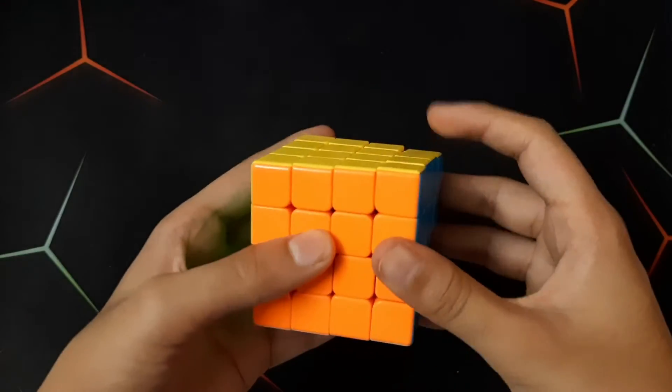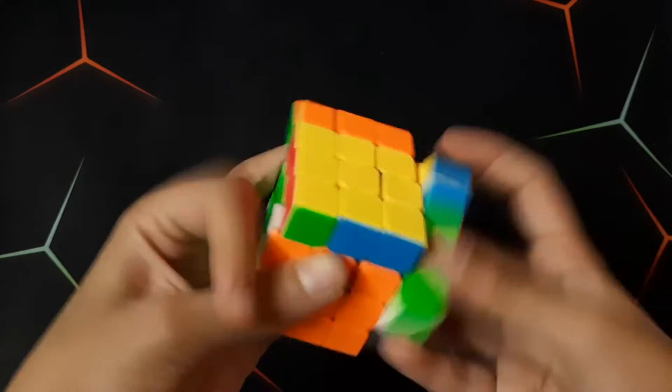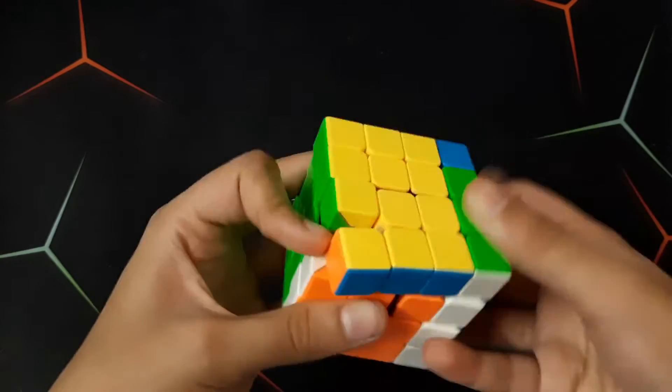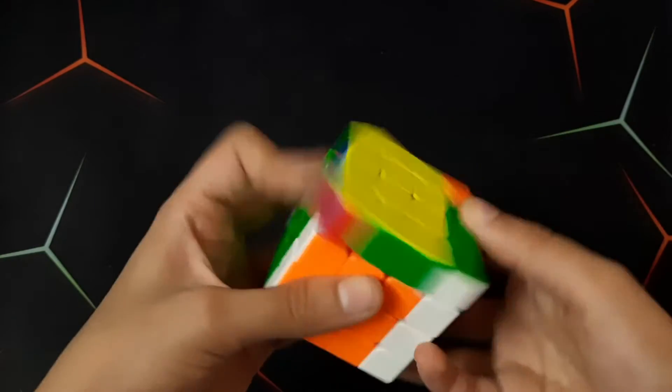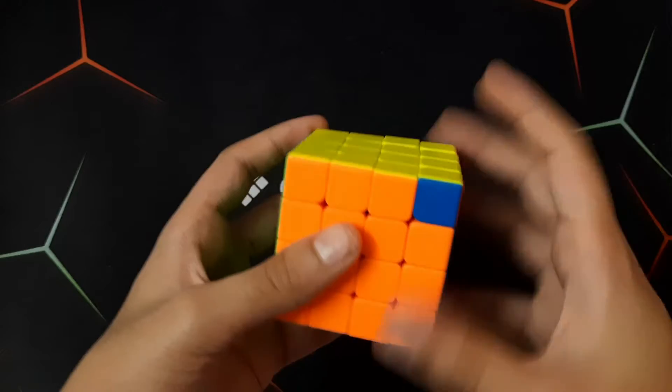So here is the regular Melong 4x4. As you can see, the regular Melong 4x4 catches a lot for me. The Melong 4x4 doesn't catch as much. So let's look at the corner cutting of the cube.